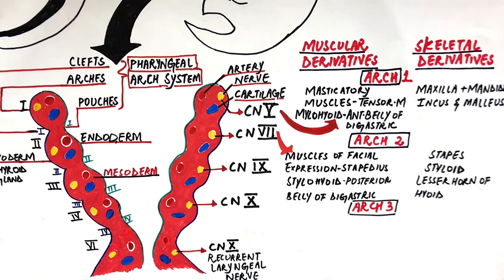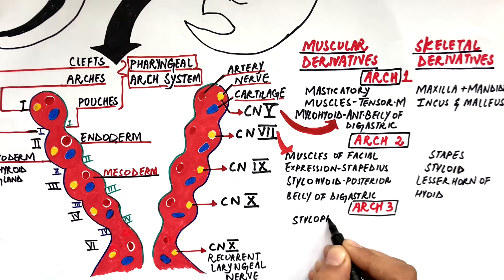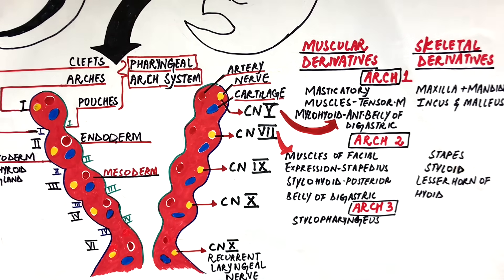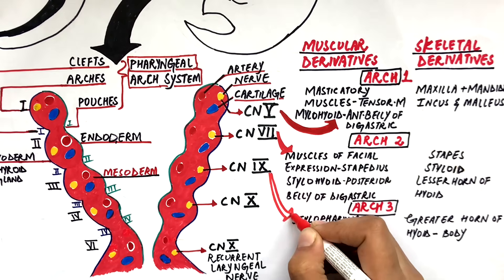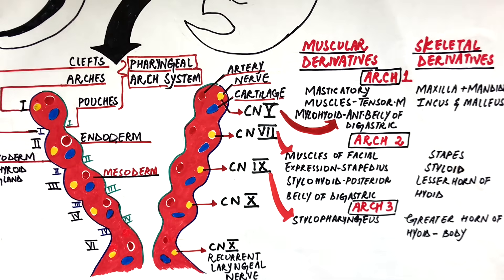The muscular derivative of the third arch will be the stylopharyngeus muscle, and its skeletal derivative will be the greater horn of the hyoid bone and part of the body of the hyoid bone. The third arch musculature will be innervated by the glossopharyngeal nerve.